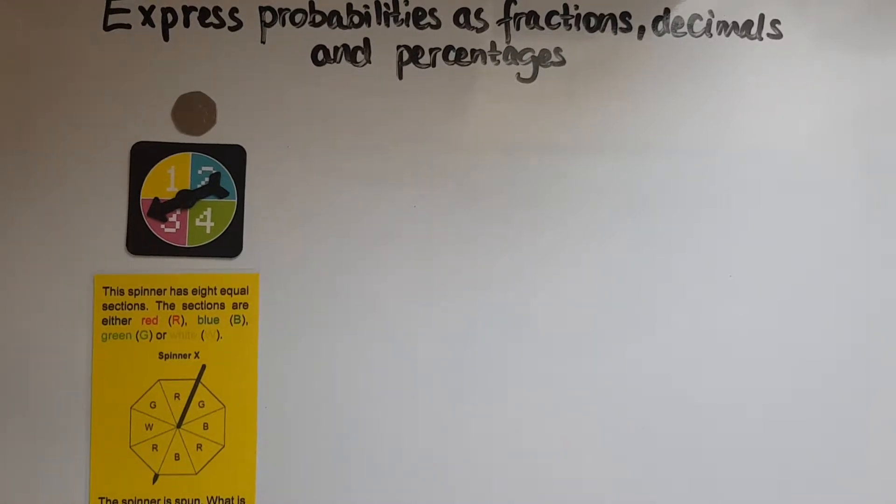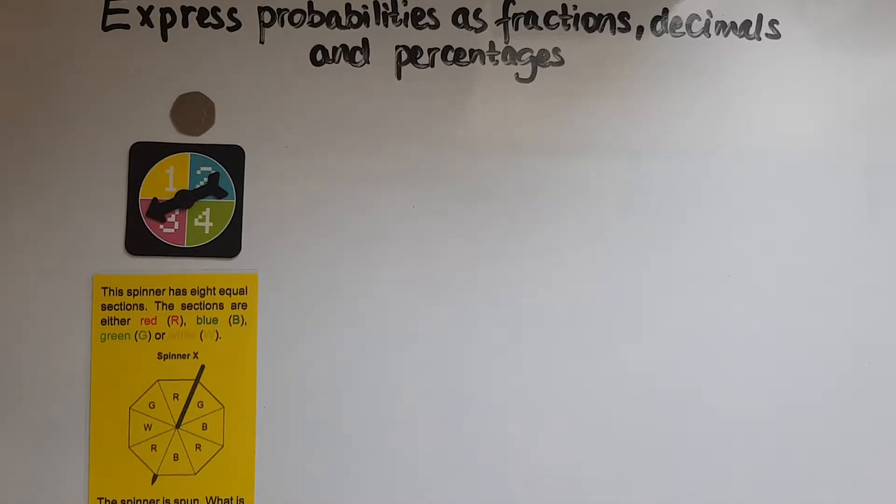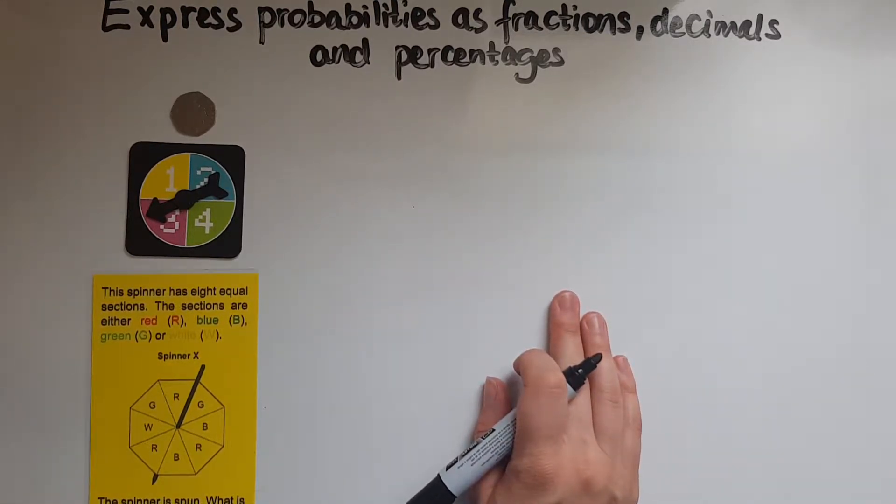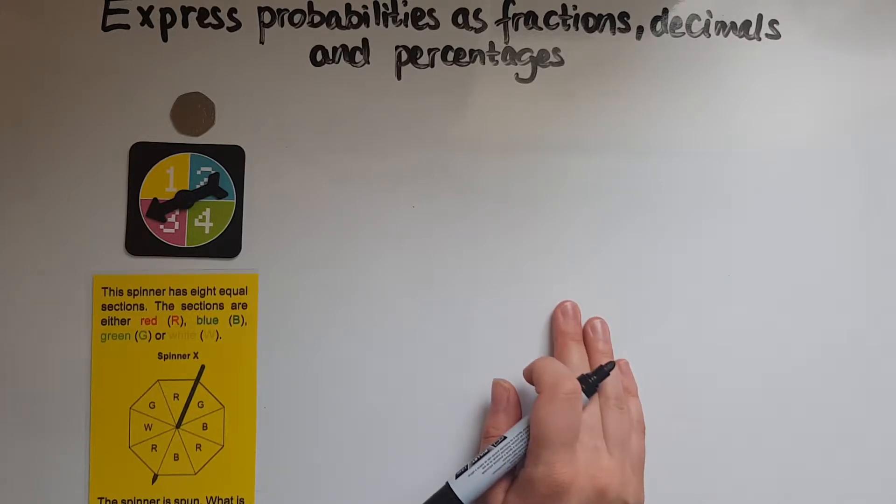In this video we'll learn to express probabilities as fractions, decimals and percentages. I've got three different objects in front of me and I'll work out different probabilities. I'll start off as a fraction because that's the easiest one to work out initially.